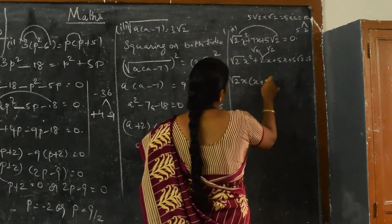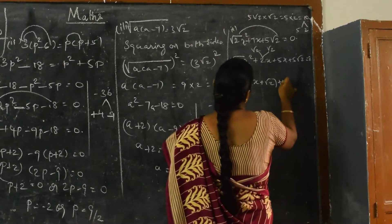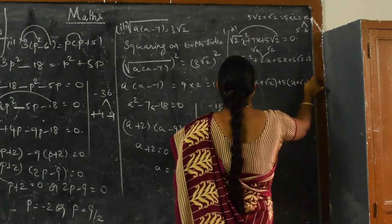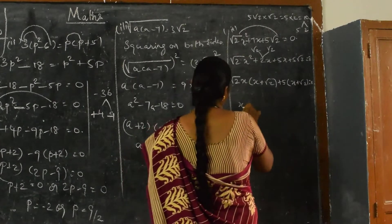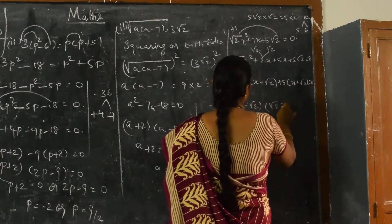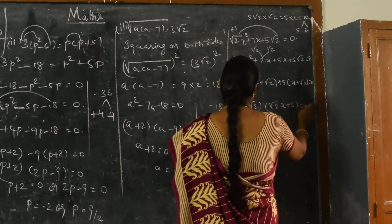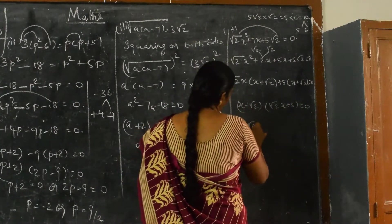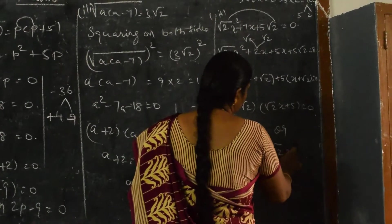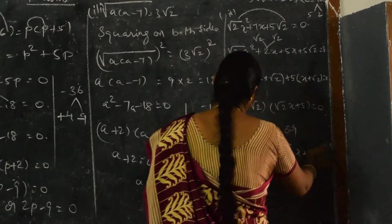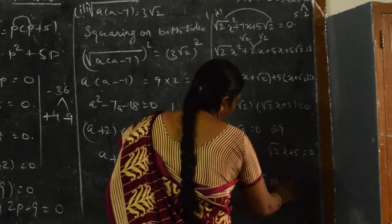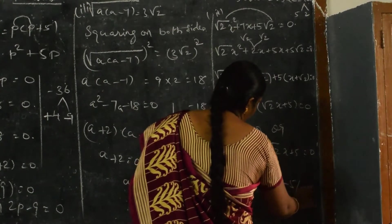The balance gives √2·x(x + √2). From the last two terms, take 5 common: 5(x + √2). Taking (x + √2) common: (x + √2)(√2·x + 5) = 0. So either x + √2 = 0 or √2·x + 5 = 0, giving x = -√2 or x = -5/√2.